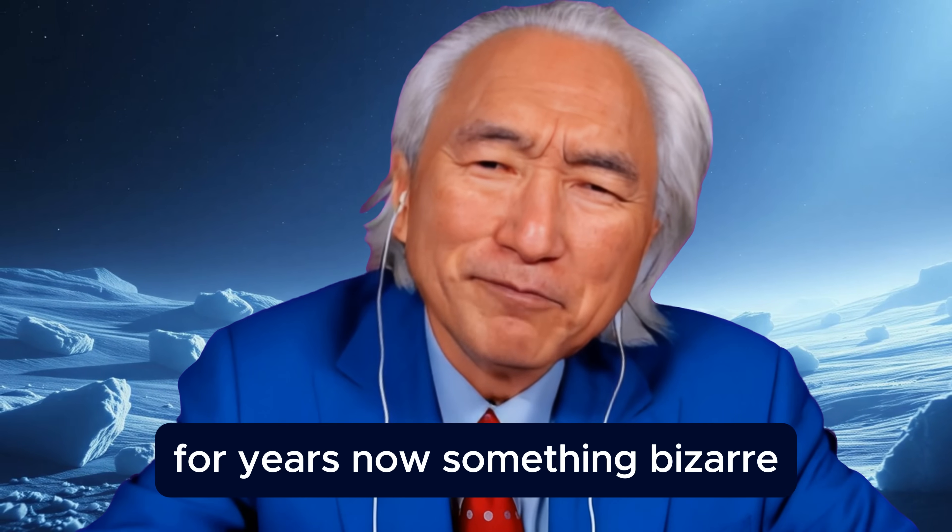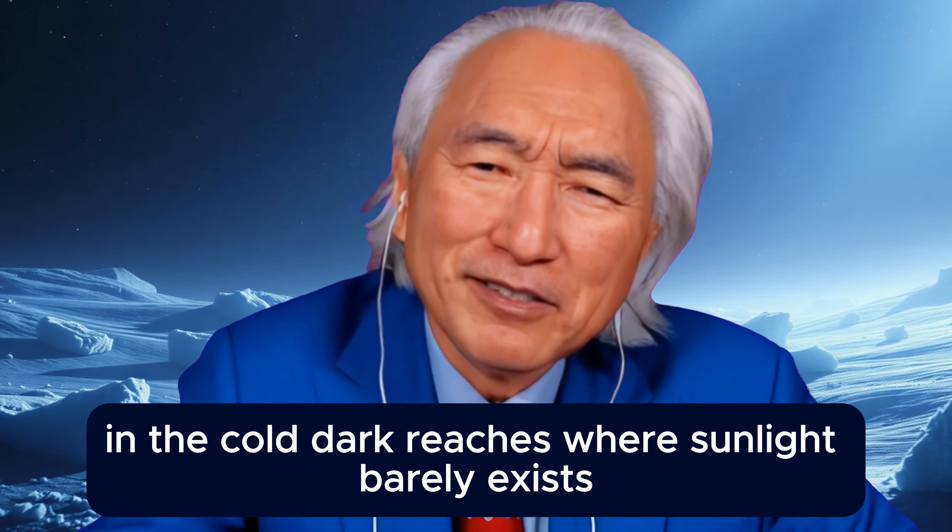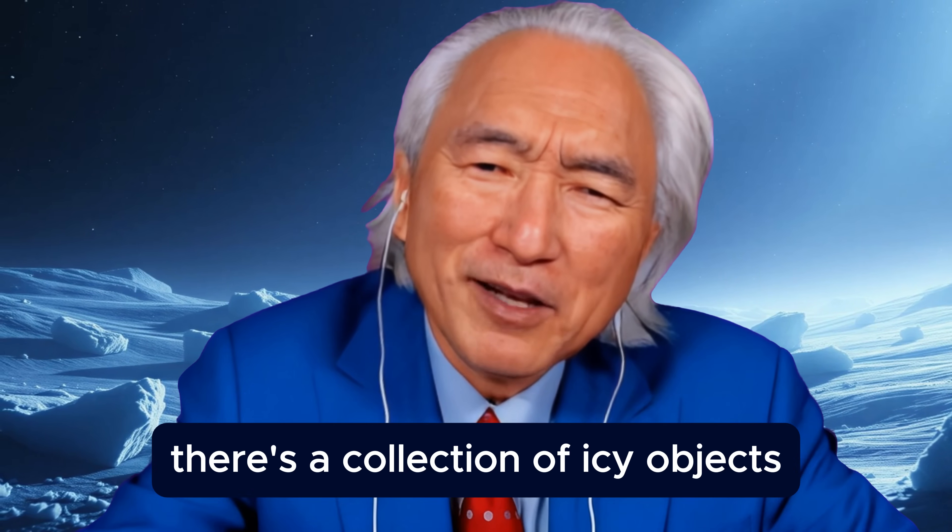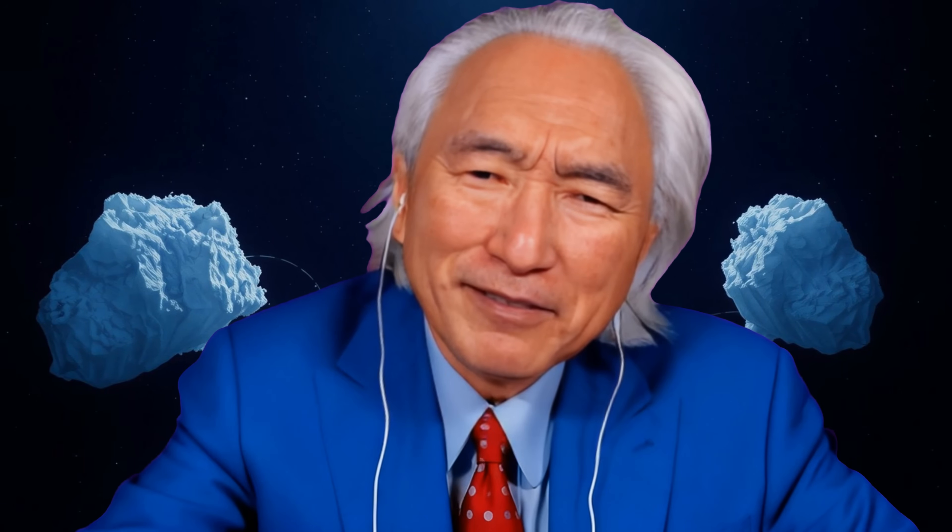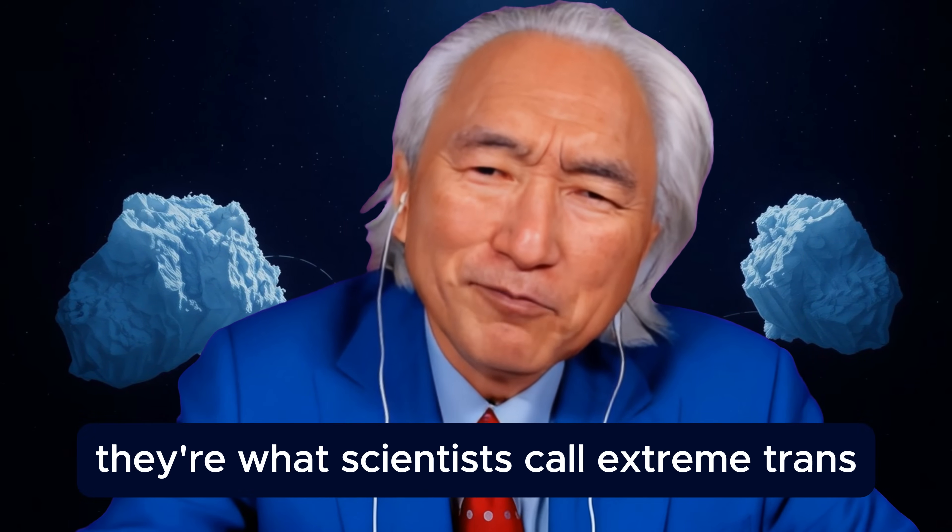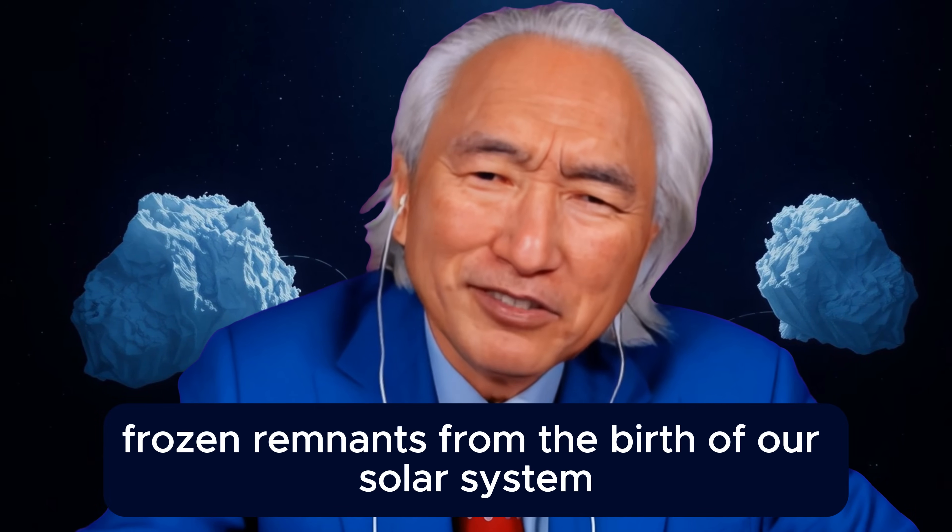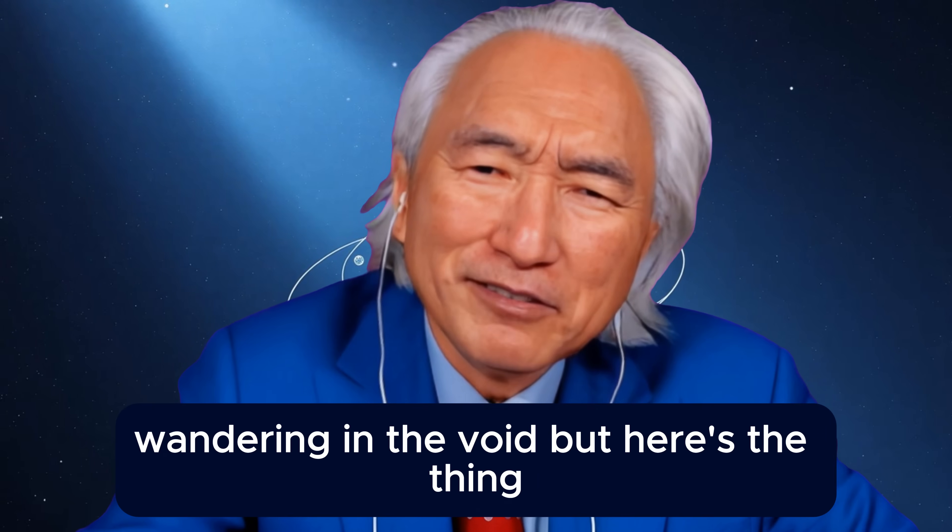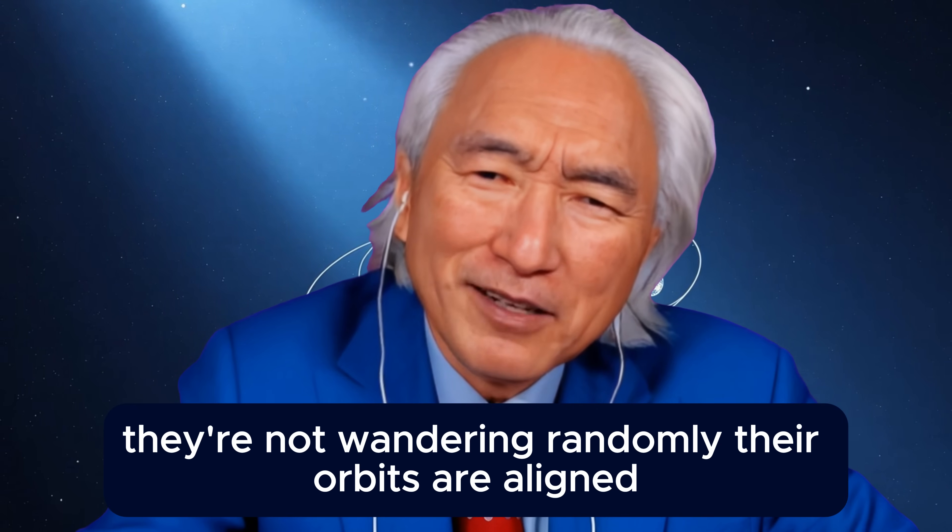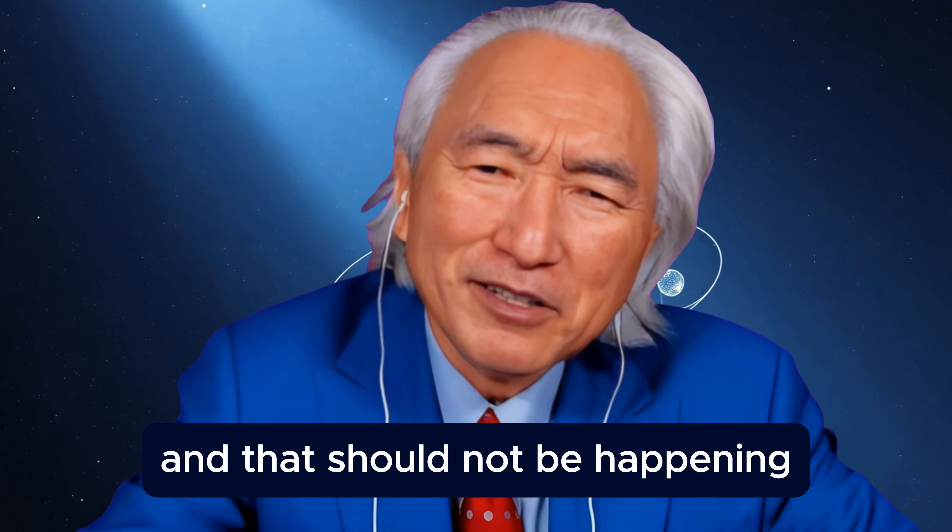For years now, something bizarre has been happening at the edge of our solar system. Way out past Neptune in the cold, dark reaches where sunlight barely exists, there's a collection of icy objects drifting through space. These aren't comets. They're not asteroids. They're what scientists call extreme trans-Neptunian objects, frozen remnants from the birth of our solar system. But here's the thing. They're not wandering randomly. Their orbits are aligned. They're tilted in similar ways, all pointing in roughly the same direction. And that should not be happening.